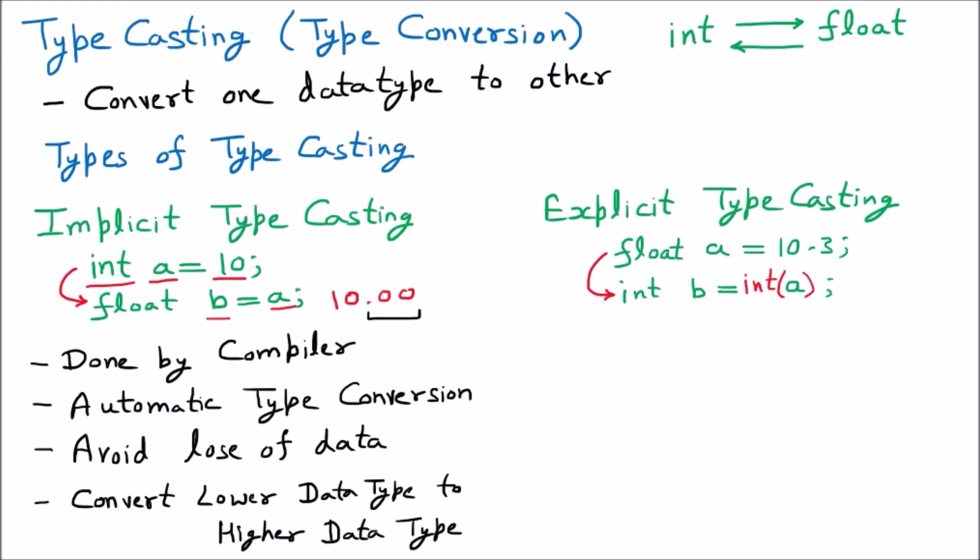We have written something explicit, and one important thing: here we are converting 10.3 to integer and the approximate value will be 10. When 10.3, which is float, is converted to integer, you can see that 0.3 is removed. If 0.3 is removed, there is a loss of data. So explicit type conversion gives you loss of data.